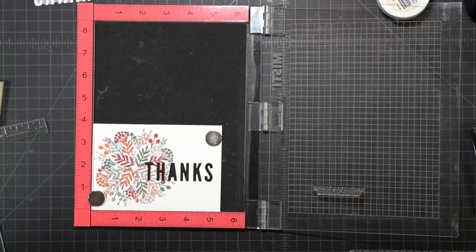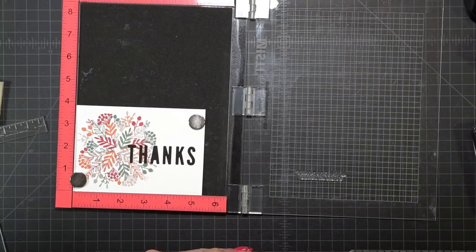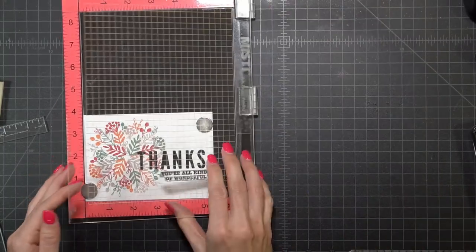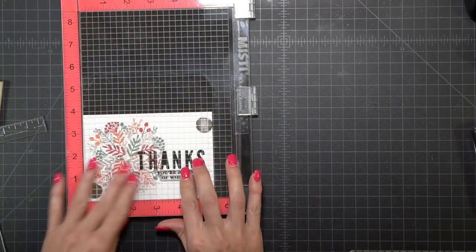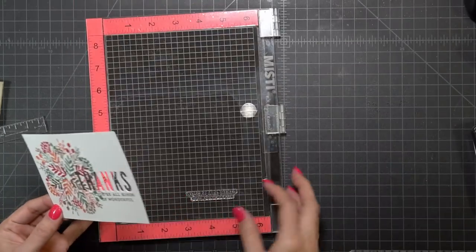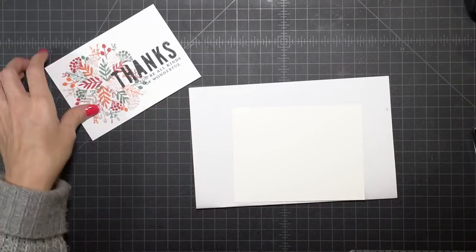You just have to go to mysweetpetunia.com and look under the download section. It will give you two of the grids. You just have to save the file and either print it on a laser printer on some acetate or take it into your local Kinko's. I've stamped the sentiment with some VersaFine Clair and I'm not going to emboss it. I'm just going to leave it as is.